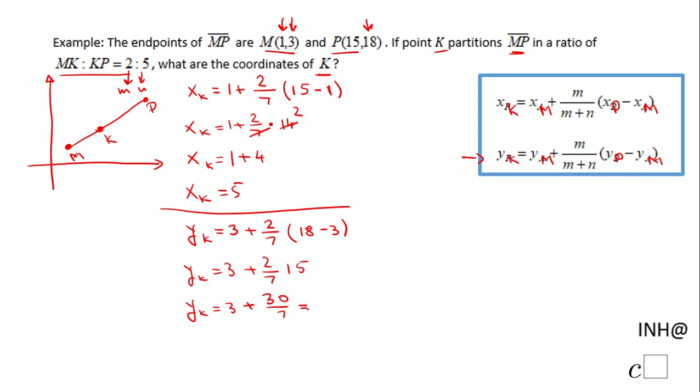What we can do here is change that natural number 3 to 21/7 plus 30/7, which will be 51/7. So the y-coordinate of point K is 51/7. Therefore, point K has the coordinates (5, 51/7), and that's it.